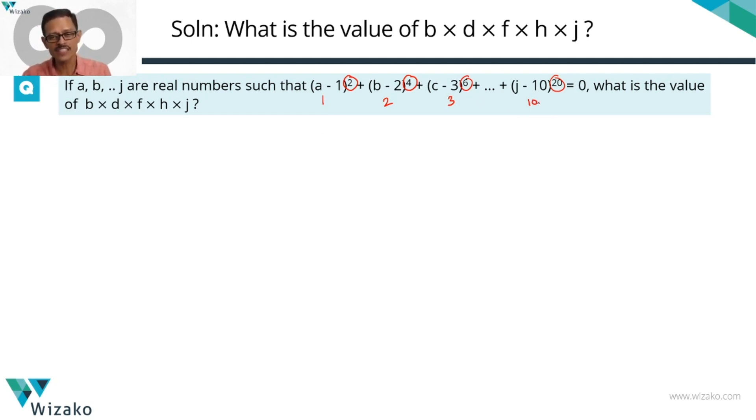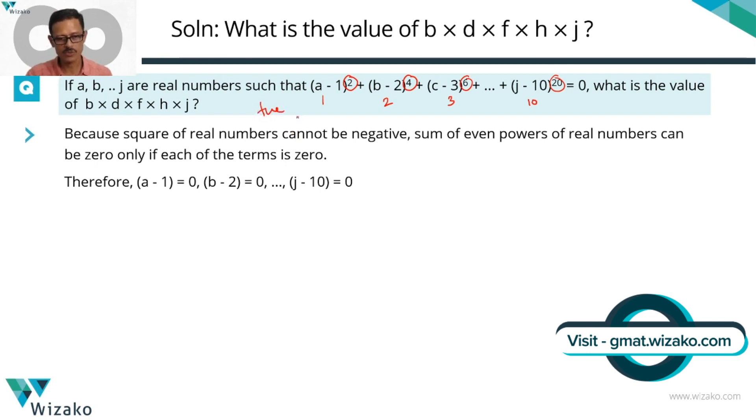We have some of these 10 expressions adding up to zero. Sum of a set of numbers can be zero when some of those numbers are positive, some are negative—this is one possibility—or if all of these numbers are zero. We realize that here none of these numbers could be negative.